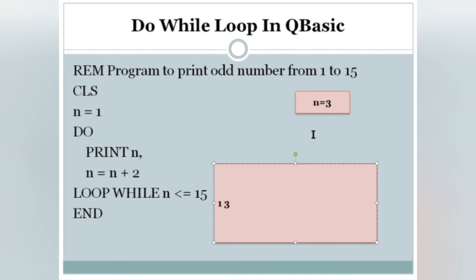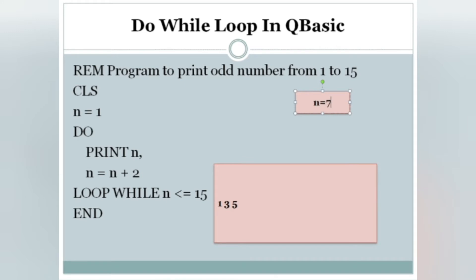N equals N plus 2: we already have 3, so 3 plus 2 is 5. It checks the condition again — N is 5; 5 <= 15, condition is true. When condition is true it goes back and PRINT N again — N value is 5. Then N equals N plus 2: 5 plus 2 is 7.